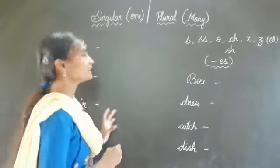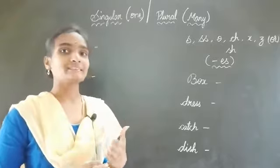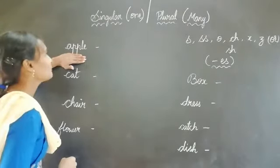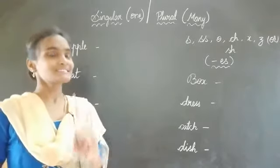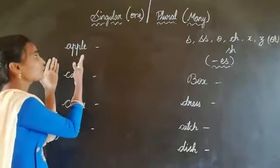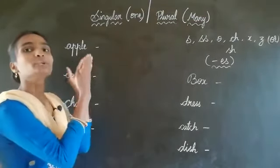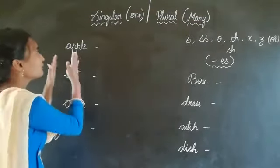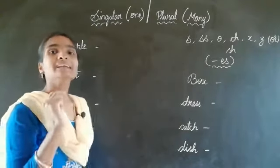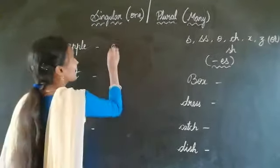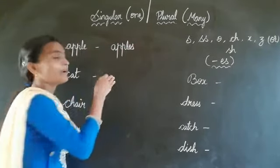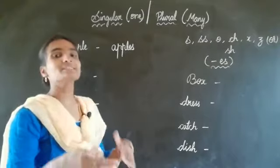Here I have taken a few words, and we will make them into plural form. See — apple. Apple is a single object. For one apple we are writing apple. We should make this one apple into many apples by adding S. Apple became apples. Apples means many.